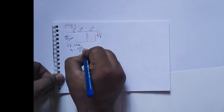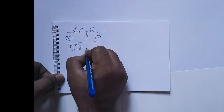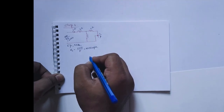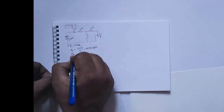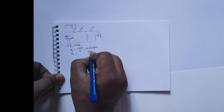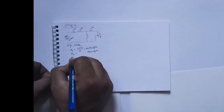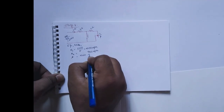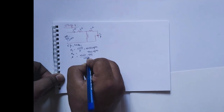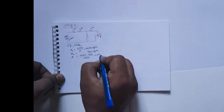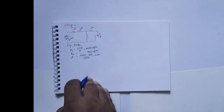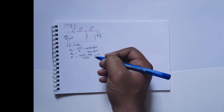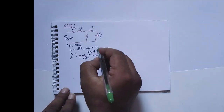The synchronous speed Ns equals 120f divided by P, which gives 1000 RPM. The motor is now running at 950 RPM, so Nr = 950 RPM. The slip s in this condition is (1000 − 950) / 1000 = 0.05. This 950 RPM is the full load speed.